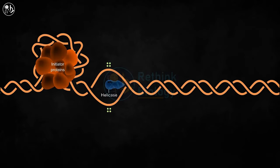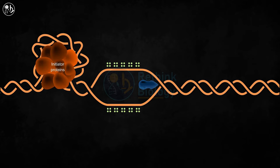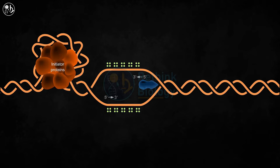In the time of replication, the enzyme helicase helps in unwinding the double-stranded DNA into two single-stranded DNA strands. The single strand binding protein (SSB protein) stabilizes them. As the template strands run anti-parallely, new DNA can be synthesized only in the five prime to three prime direction, and the chain elongation process occurs differently on the two template strands.